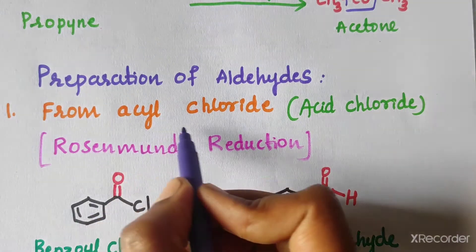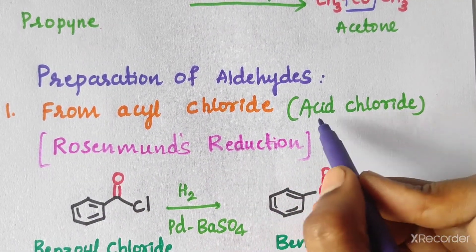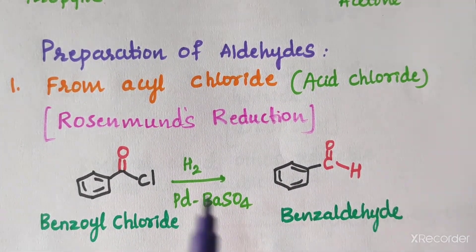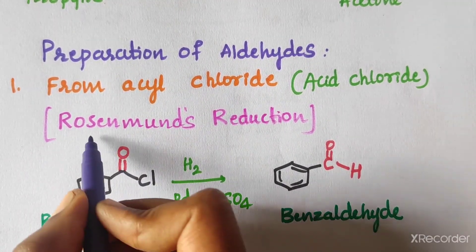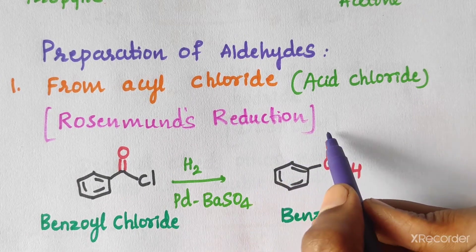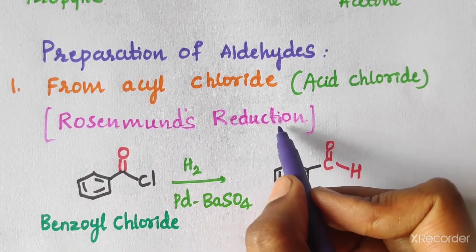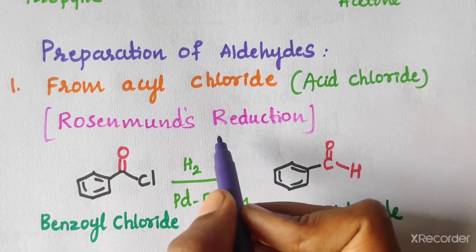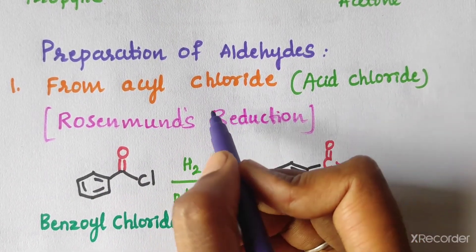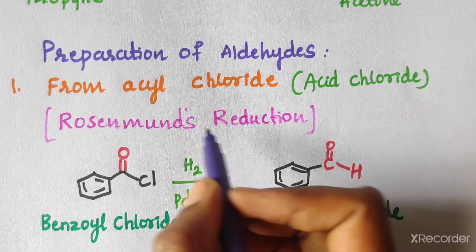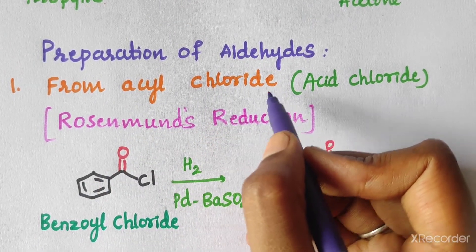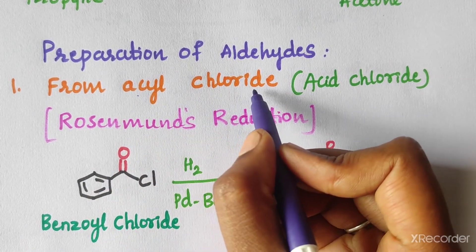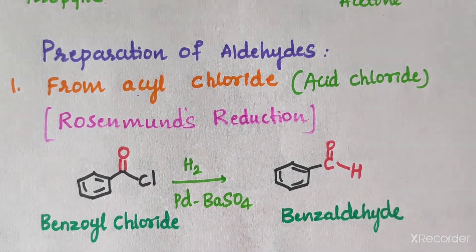The fifth method for preparation of aldehydes is from acyl chlorides (acid chlorides). This involves a very important reaction called Rosenmund's reduction reaction. The starting material is acyl chloride.